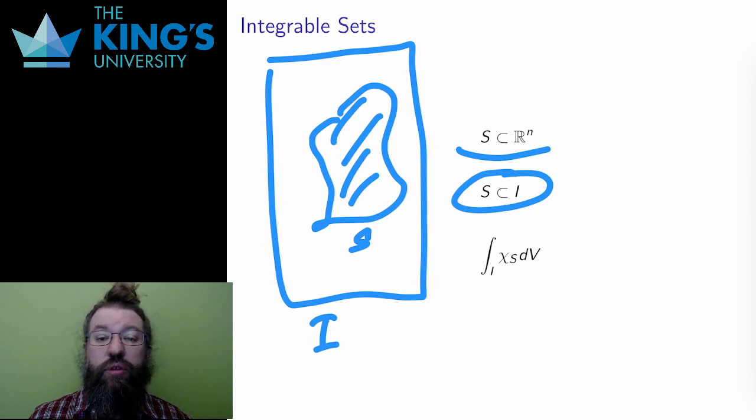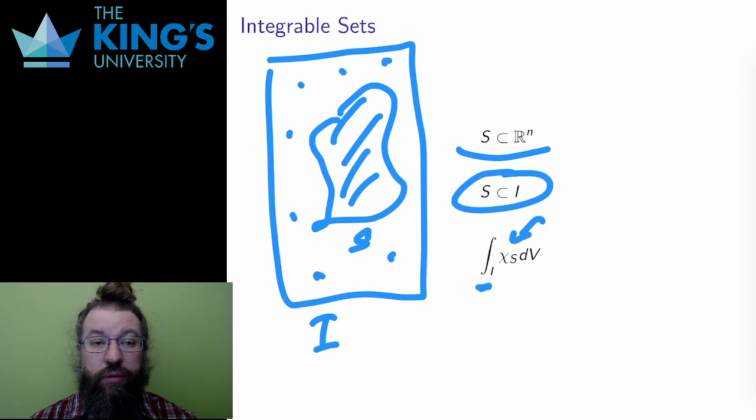I choose some interval I such that S is a subset of I. Then I integrate over the interval I, but I integrate the characteristic function. Since the characteristic function is zero outside of S, this removes any points outside of S from the integral. When this integral exists, the set S is called an integrable set. Not all subsets in Rⁿ can be used as domains for integration, only sets for which this integral is defined.